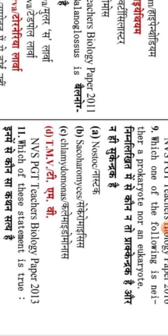The next question is: which one of the following is neither a prokaryote nor a eukaryote? Among the options — which include types of algae — the Tobacco Mosaic Virus (TMV) is the correct answer, because a virus is a non-living entity outside a living body and cannot be classified as either prokaryote or eukaryote.